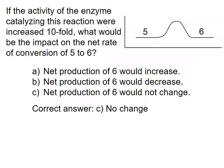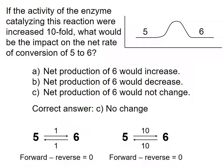So increasing the activity of this enzyme tenfold makes the forward reaction tenfold faster, and the reverse reaction also tenfold faster. So if the initial reaction rate was one unit in each direction, the final reaction rate is ten units in each direction. There is no net change in conversion of compound 5 to compound 6.